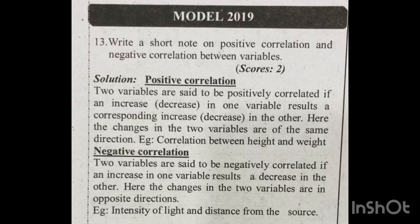For negative correlation, if one variable increases, the other decreases — the change is opposite. Two variables are said to be negatively correlated if an increase in one variable results in a decrease in the other variable. The changes in two variables are in opposite direction — that is an inverse relation, a negative relation.